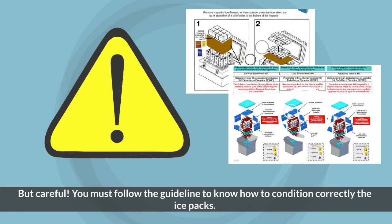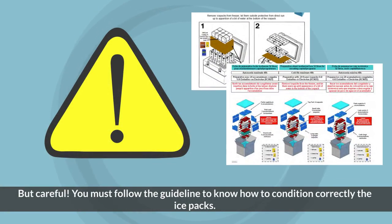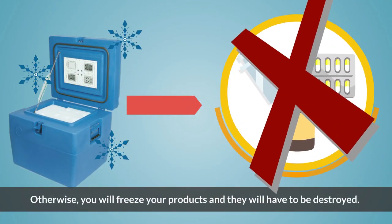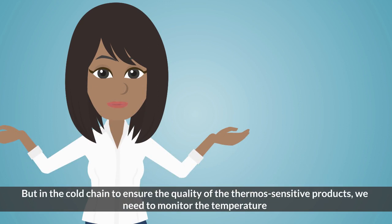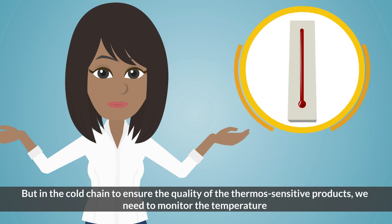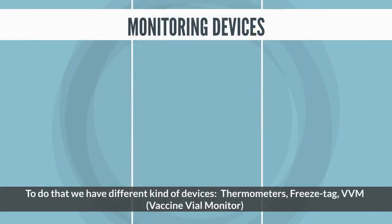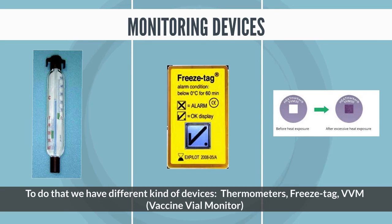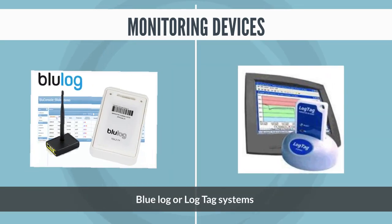But be careful — you must follow the guidelines to know how to condition the ice packs correctly. Otherwise, you will freeze your products and they will have to be destroyed. To ensure the quality of thermosensitive products, we need to monitor the temperature. To do that, we have different kinds of devices: thermometers, freeze tags, VVM (vaccine vial monitor), blue log, or log tag systems.